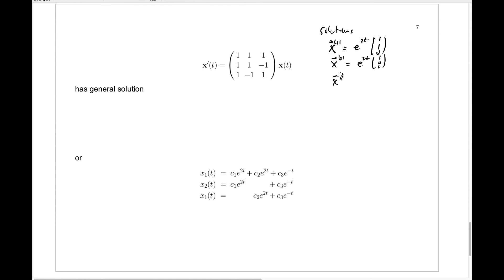And we have x3 of t which is e to the minus t for eigenvalue negative 1, times the eigenvector which was (-1, 1, 1). And so what's our general solution? Our general solution is that x of t is a constant c1 times x1